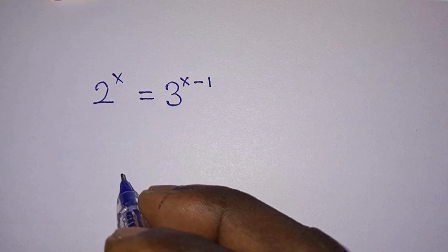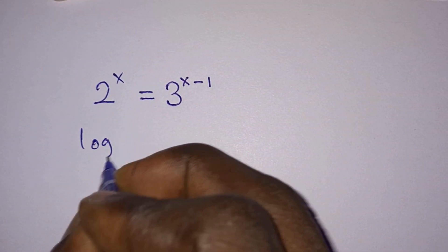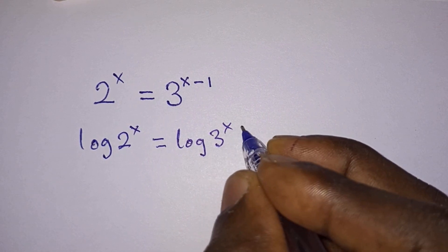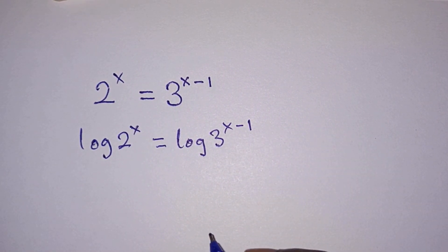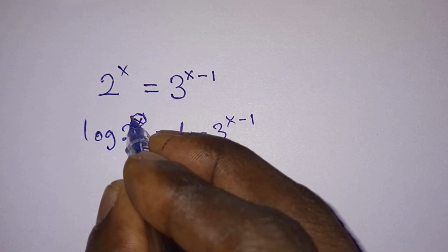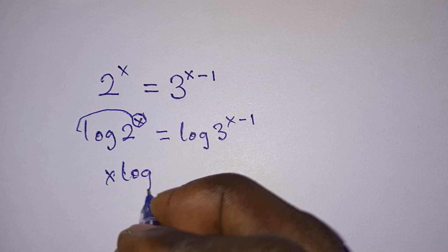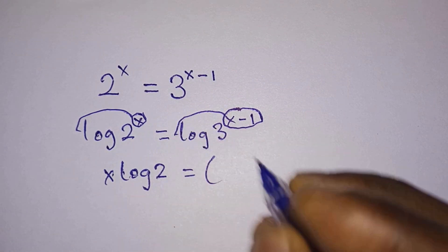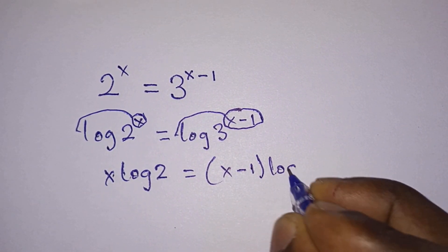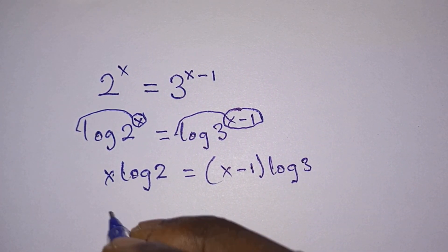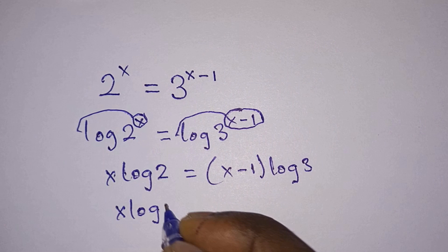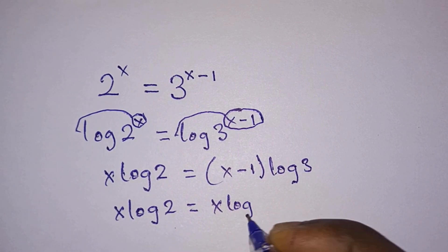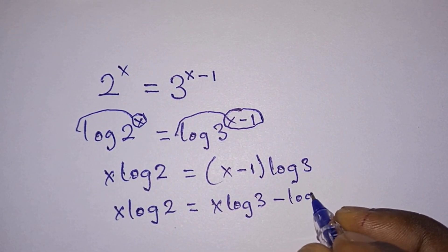The normal approach that everybody knows: first of all, you introduce log on each side of the equation — this is in base 10 — so we have log of 2^x and log of 3^(x-1). From the properties of log, the power becomes the leading number, so we have x·log2 is equal to (x-1)·log3. We distribute log3 to get x·log3 minus log3.